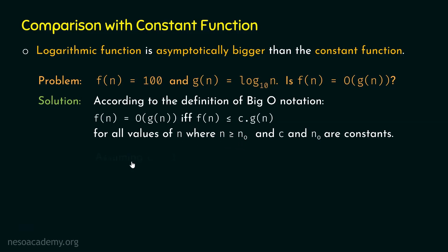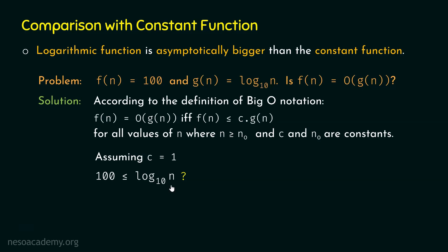Let us assume c = 1. We know f(n) = 100 and g(n) = log n base 10. We get the inequality: 100 ≤ log n base 10. Since g(n) = log n base 10 and c = 1, multiplying gives log n base 10. So we need to check whether 100 ≤ log n base 10 is true.